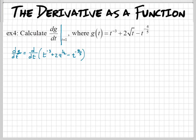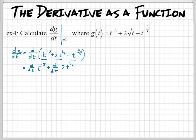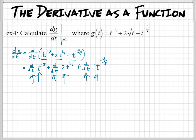Now when we take the derivative of this, we have to take the derivative of each term. So it's like you're going d over dt of t to the negative 3, and d over dt of 2t to the 1/2, minus d over dt — or we could say plus and just say this is negative t to the negative 4/5. That's a lot of d over dt's. So let's just take the derivative of each of these.